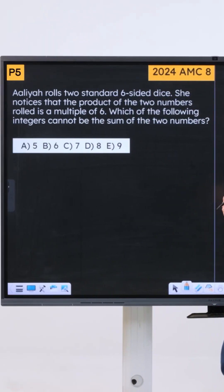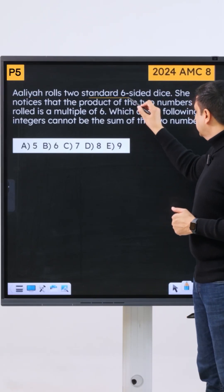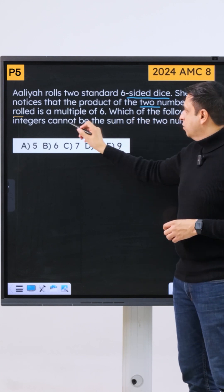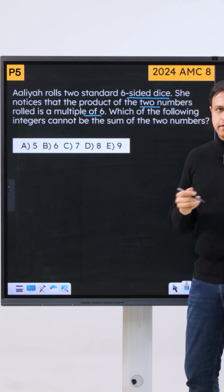Now here's problem number five. Alia rolls two standard six-sided dice. She notices that the product of the two numbers rolled is a multiple of six.